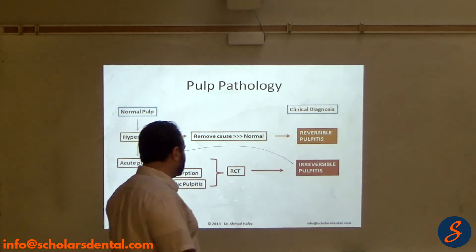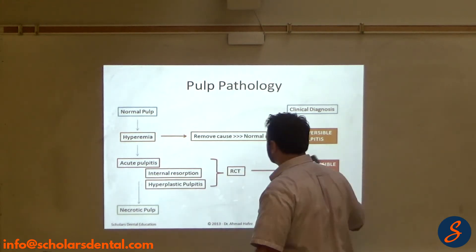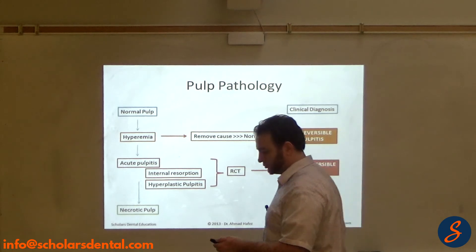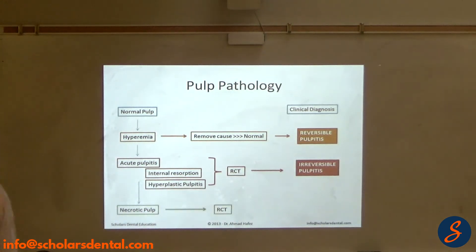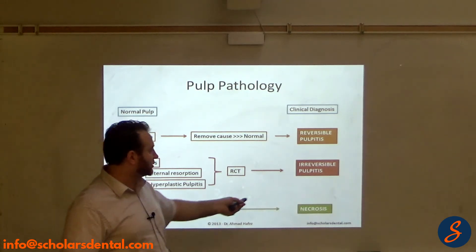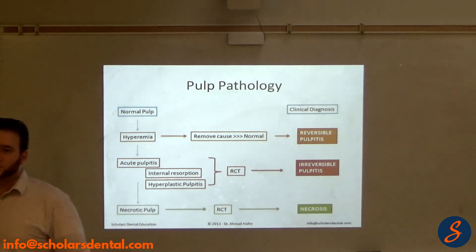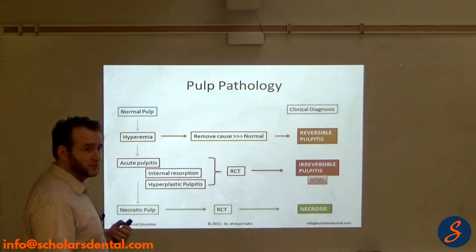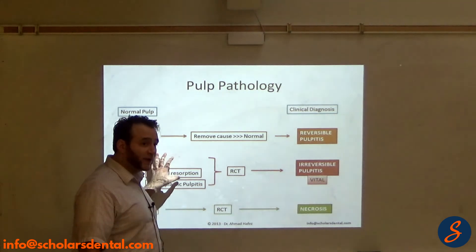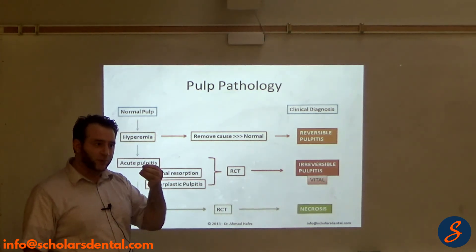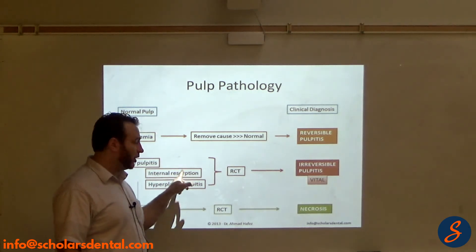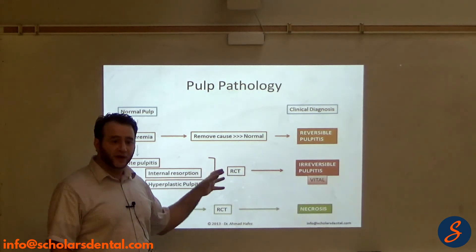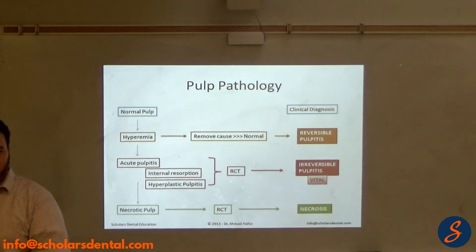When it reaches necrosis, the treatment is also root canal treatment. So we call this necrosis — but how come necrosis is not part of irreversible pulpitis, why don't we just throw it in there as well? Because everything under irreversible pulpitis is still vital. The pulp in internal resorption: vital. The pulp in hyperplastic pulpitis: still vital. It's not normal, but it's vital — it's not necrotic. So that's why necrosis has its own classification.